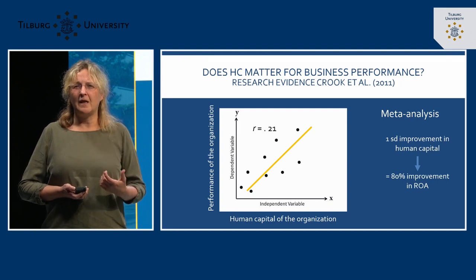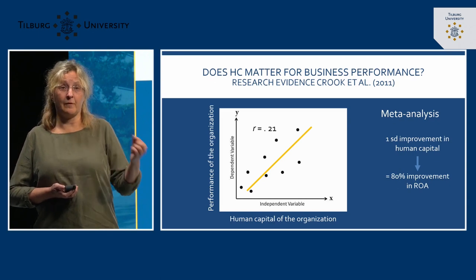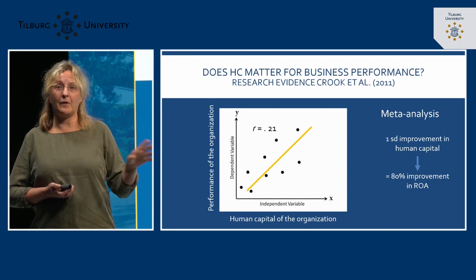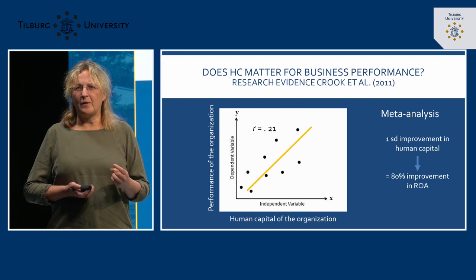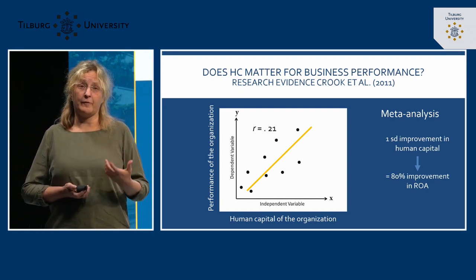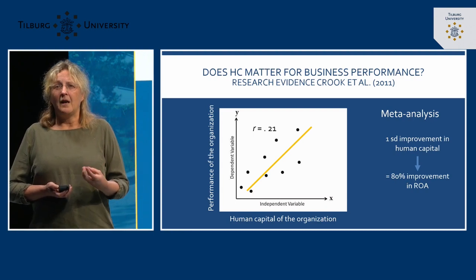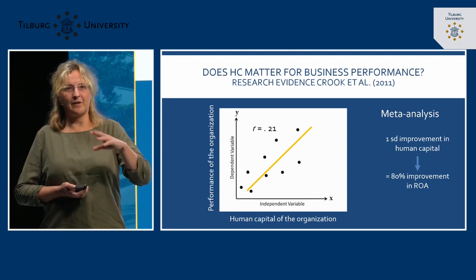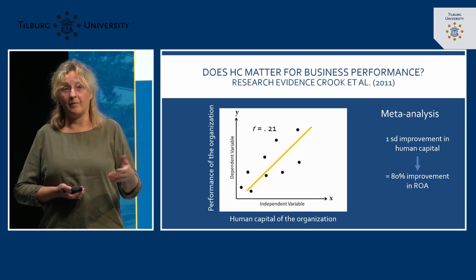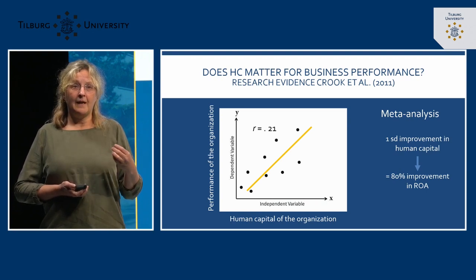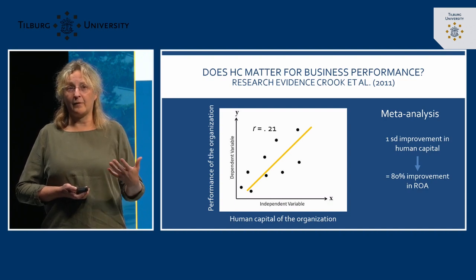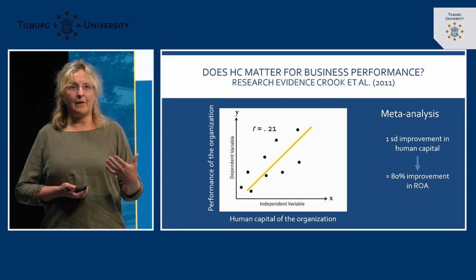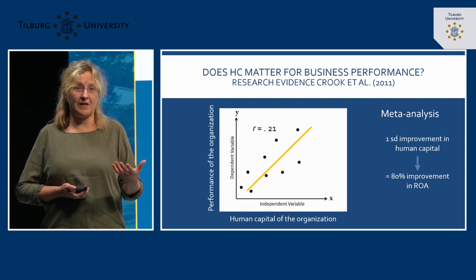So what does that mean? A one standard deviation increase in human capital — for example, a one standard deviation increase in the training budget of an organization compared to the mean of the sample — leads to a 0.21 improvement in the performance outcome, such as the financial performance of the organization. Another example is the total experience of the board of managers. Imagine a team of five managers responsible for guiding the entire organization, where the average board member has at least 10 years of experience, giving a combined total of around 60 years of experience in that company.